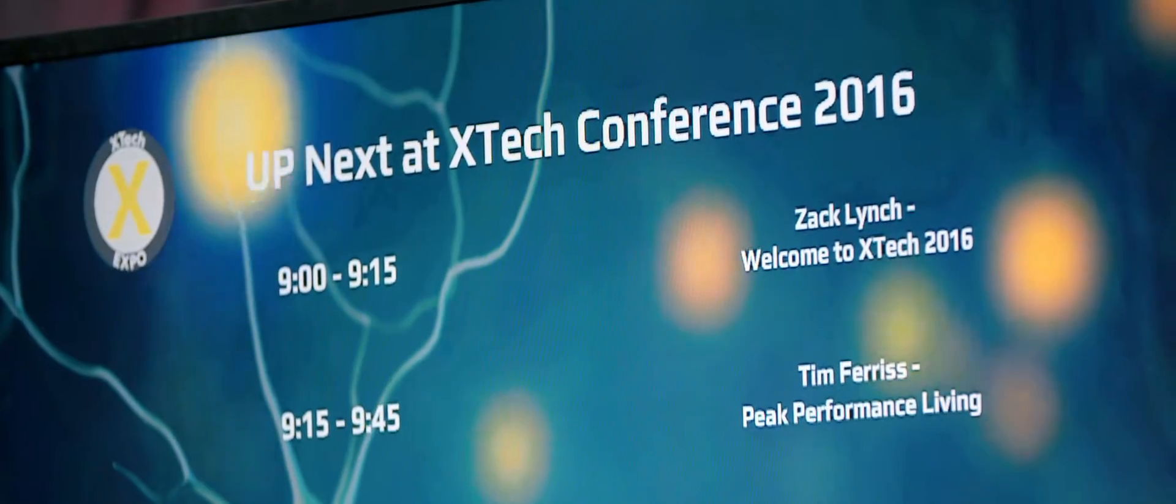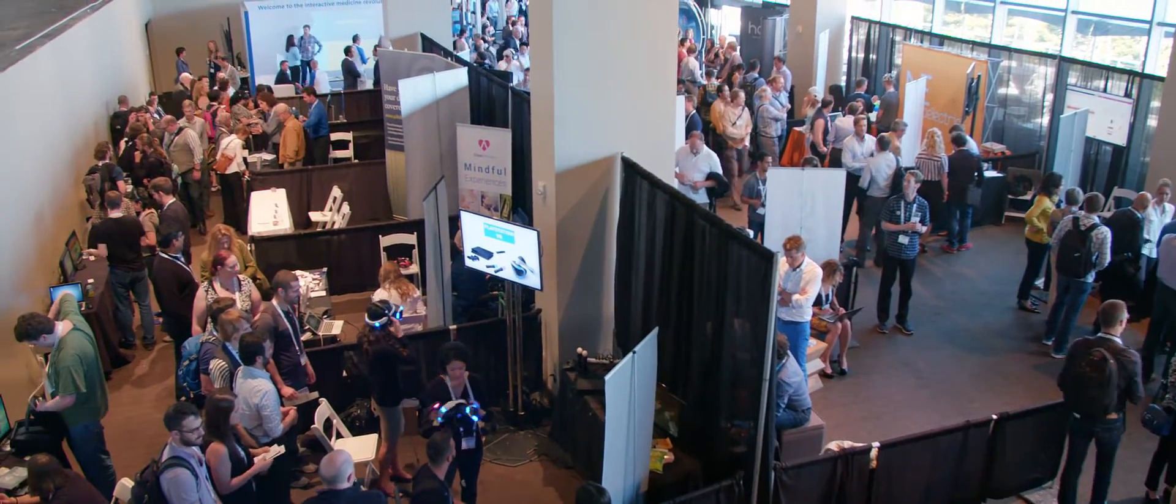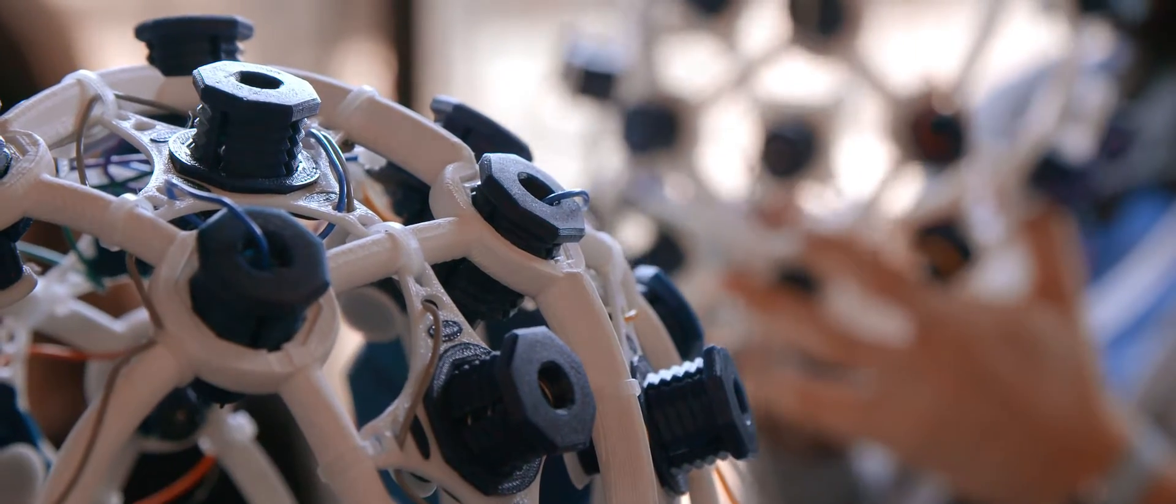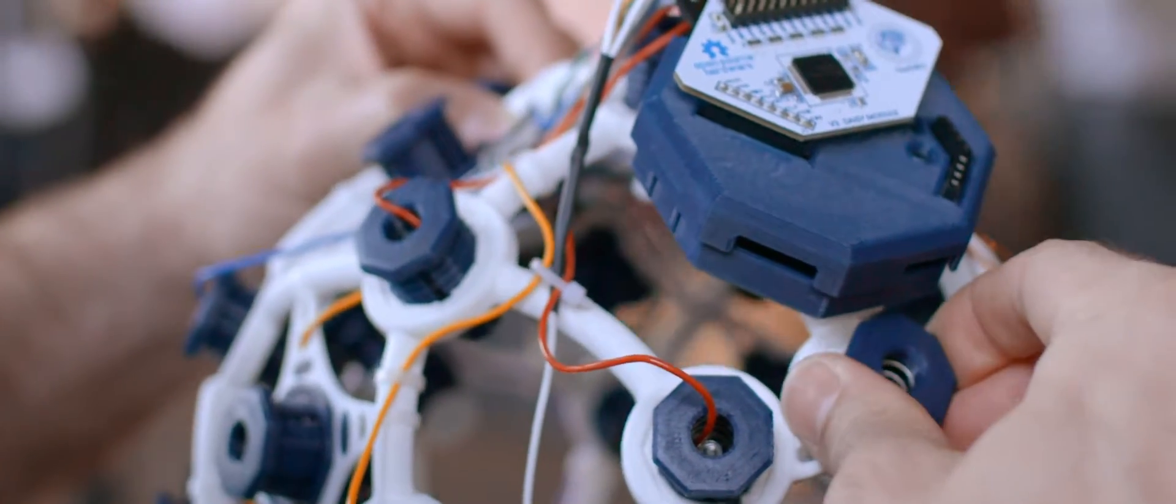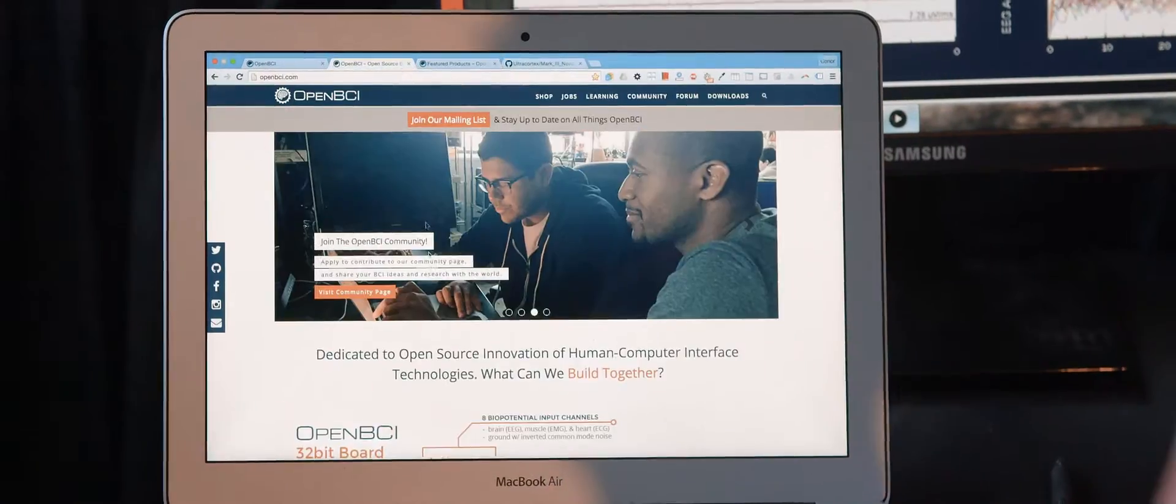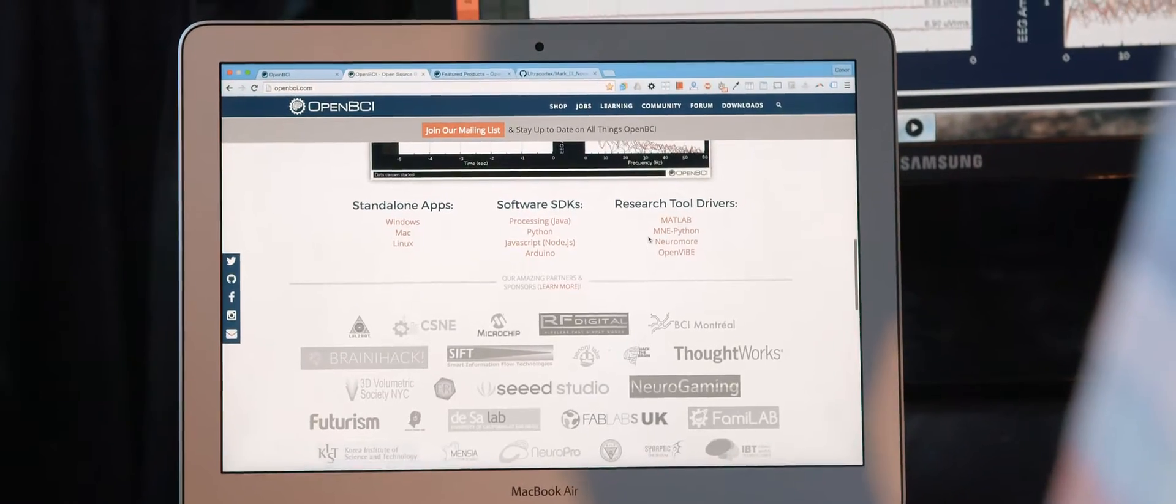We make a number of products. We make something called the Ultra Cortex, which is a 3D printed electrode headset. By open sourcing what we're doing, providing all the schematics, providing the design files, it helps innovation increase in velocity.